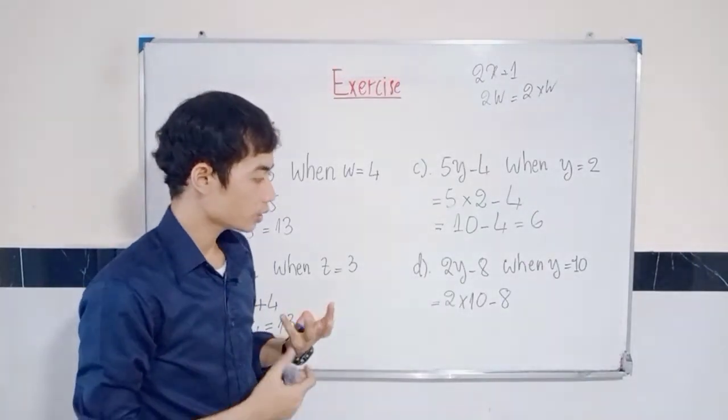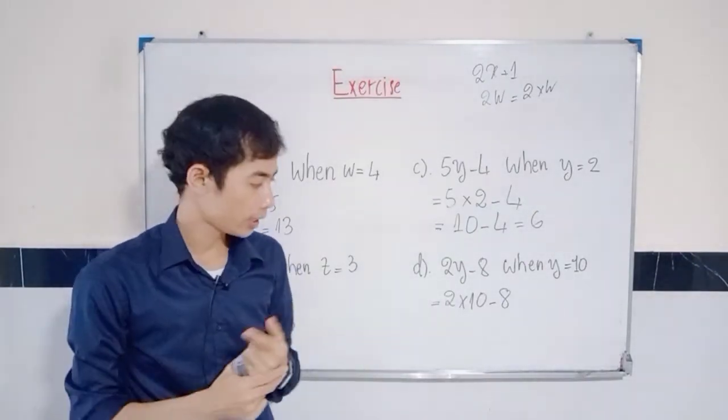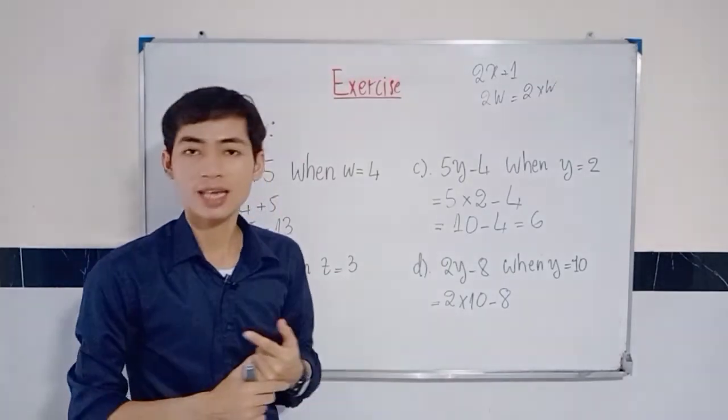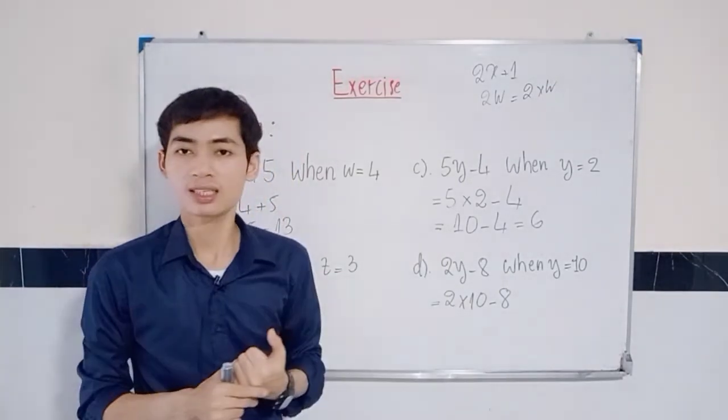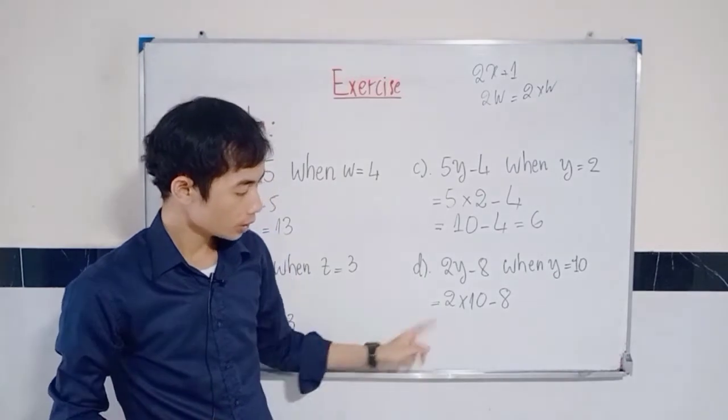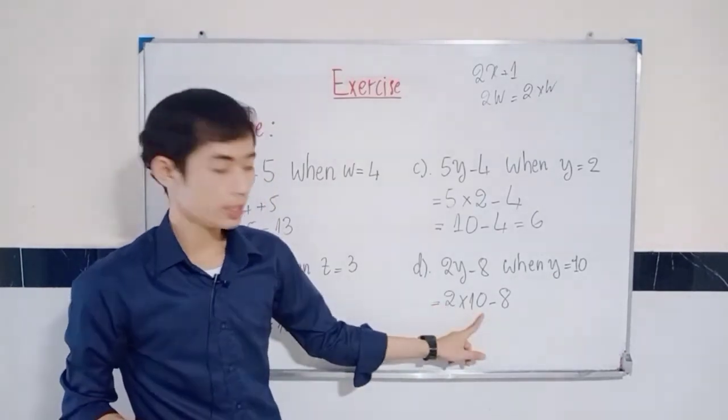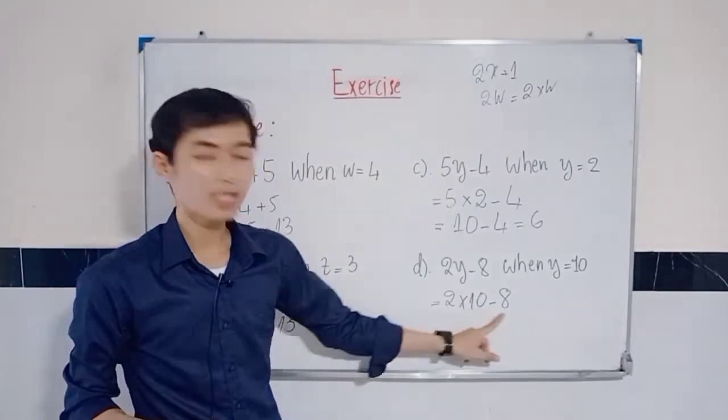Next, you're going to have 2 times 10 minus 8. You can do multiplication first. So, 2 times 10 is 20. 20 minus 8.